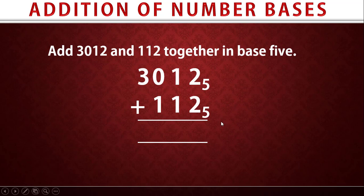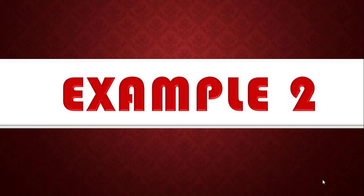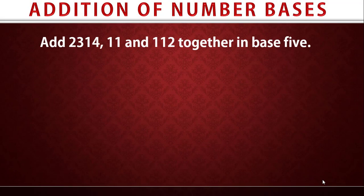Starting the addition: two plus two gives four — four is less than five, so we write four directly. One plus one gives two — less than five, write two directly. Zero plus one gives one — less than five, write one directly. Three plus zero gives three — less than five, write three directly. So the result in base five is 3124.